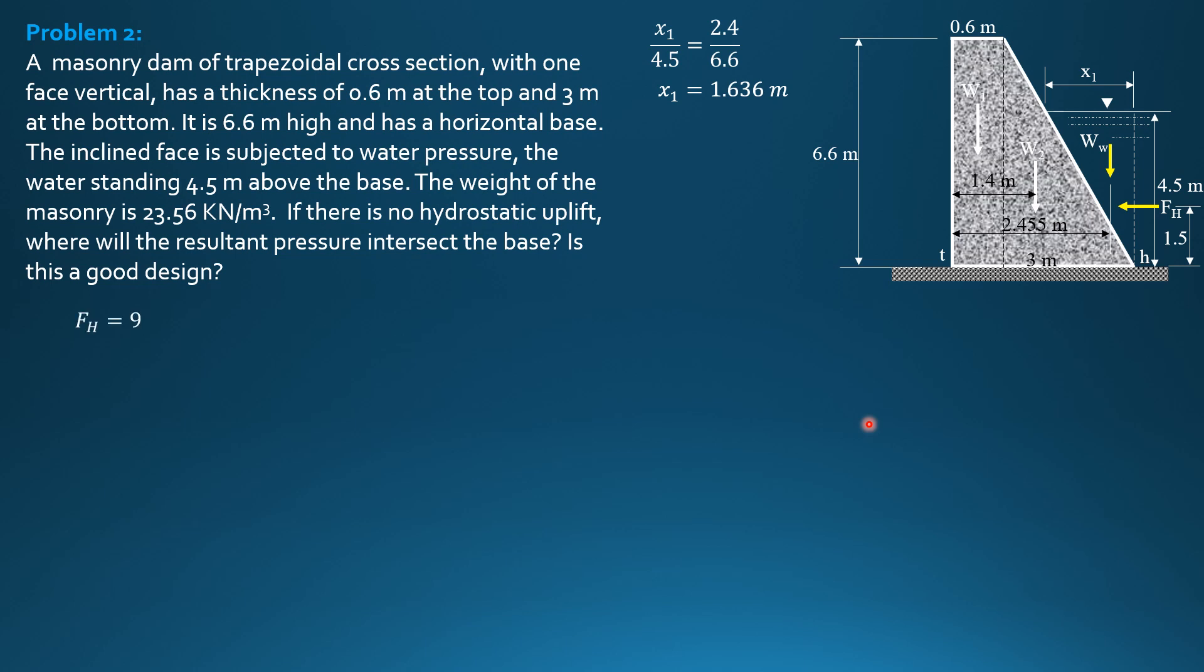FH is specific weight of water 9.81, times 4.5 over 2, area 1 by 4.5, which equals 99.33 kilonewtons. Then weight of water equals 9.81 times one-half of X1, 0.5 of 1.636, height 4.5 times perpendicular to the board 1. So weight of water is 36.11 kilonewtons.